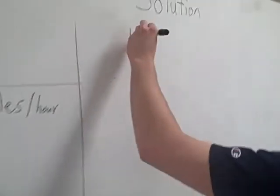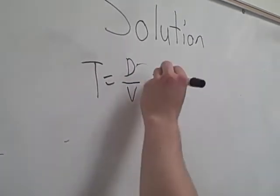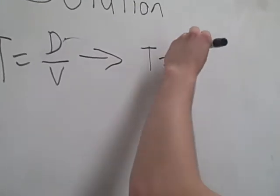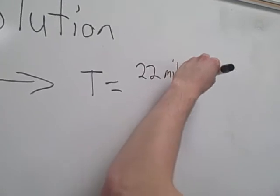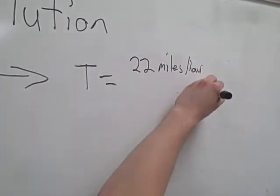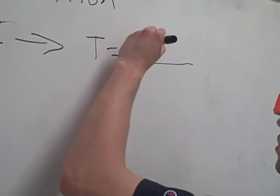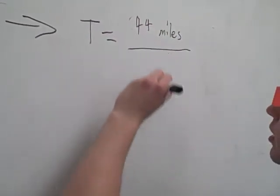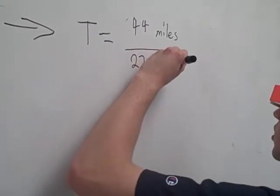So we come over here, take our relationship. T equals distance divided by velocity. 44 miles divided by 22 miles per hour.